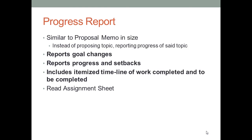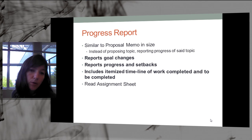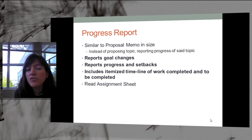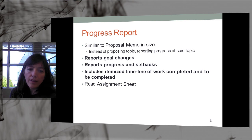The progress report is the next assignment for this unit. It's similar in size to the proposal memo, but instead of proposing a topic, you'll be reporting your progress on said topic — assuming your proposal has been accepted. The key components, which make up the majority of the progress report, are: reporting goals and any changes in goals, the progress and setbacks to date, and an itemized timeline with dated milestones of work completed and yet to be completed.